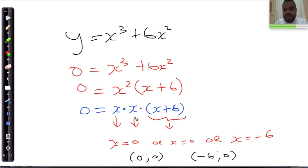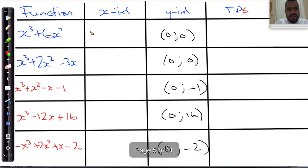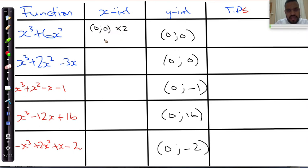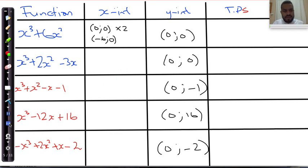This one occurs twice. Putting that in our table: (0, 0) occurs twice, and (−6, 0). So the first intercept is (0, 0) — occurring twice — and this one is (−6, 0). That is the first example. I'm going to continue with the second example where we have a common factor and can easily solve for the x-intercept, which is negative 6.